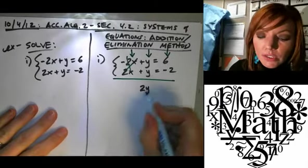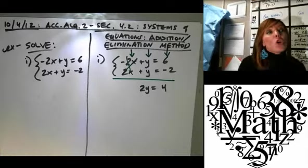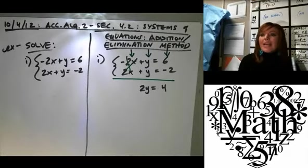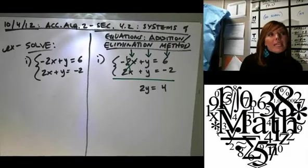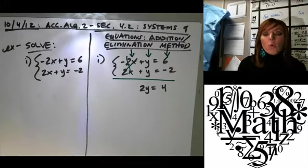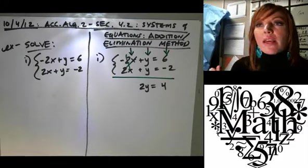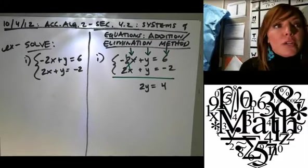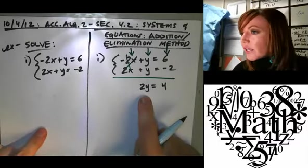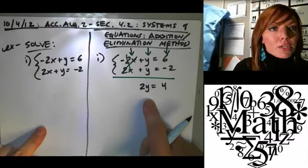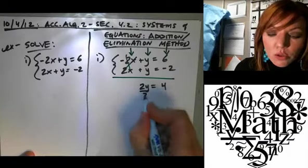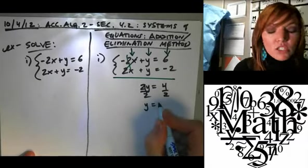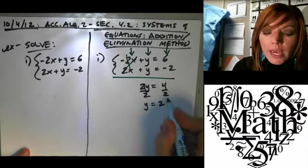2y equals how much? 4. That is the goal of the addition method, is to get something, one of the variables to cancel out. So when you first look at it, if you can add them together and something cancels out, then you're good. It's super easy. Okay, how do I get y by itself here? Stacy, what do I do? Divide by 2. So then y equals how much? What's 4 divided by 2? 2. Okay, then.